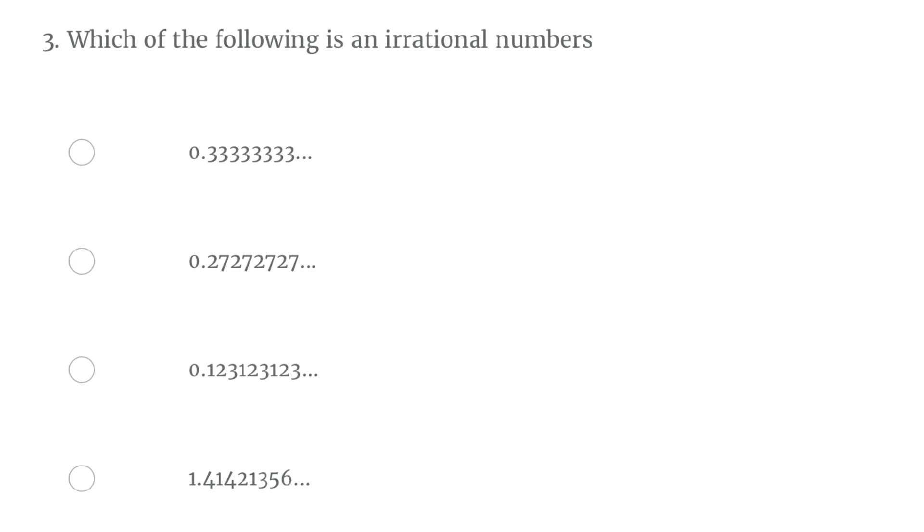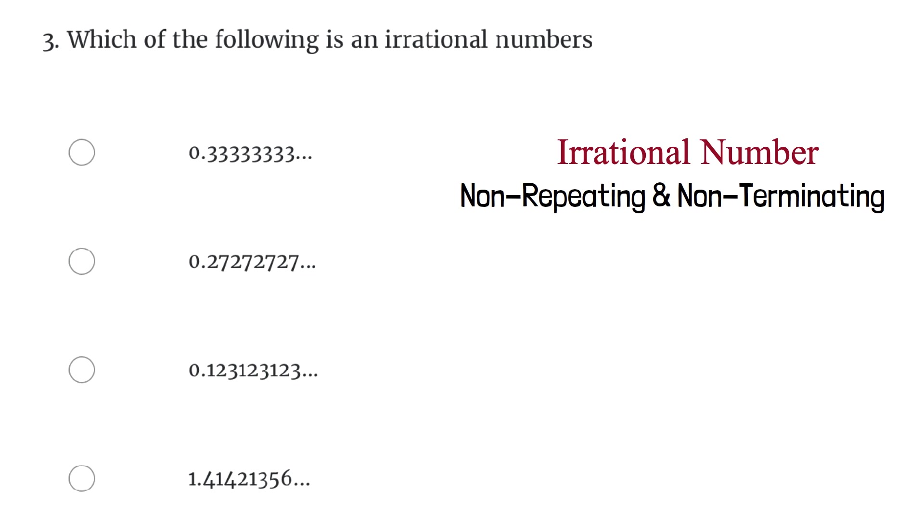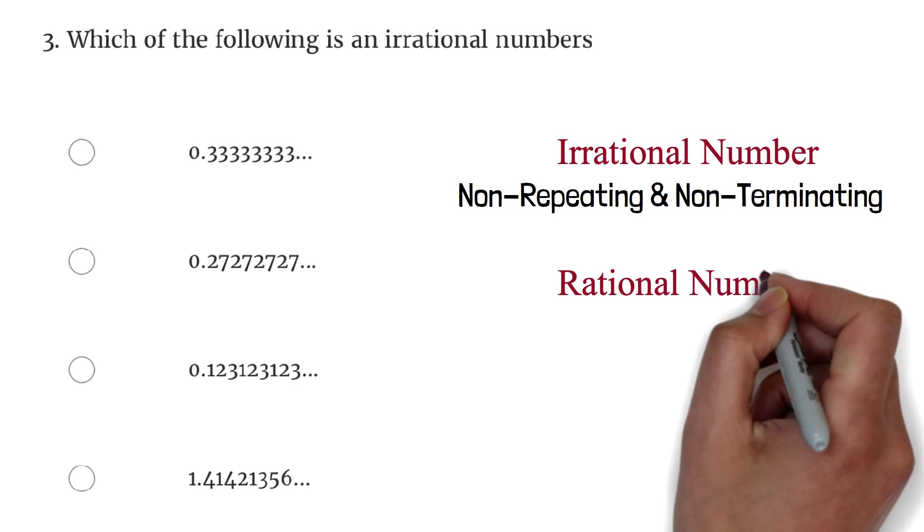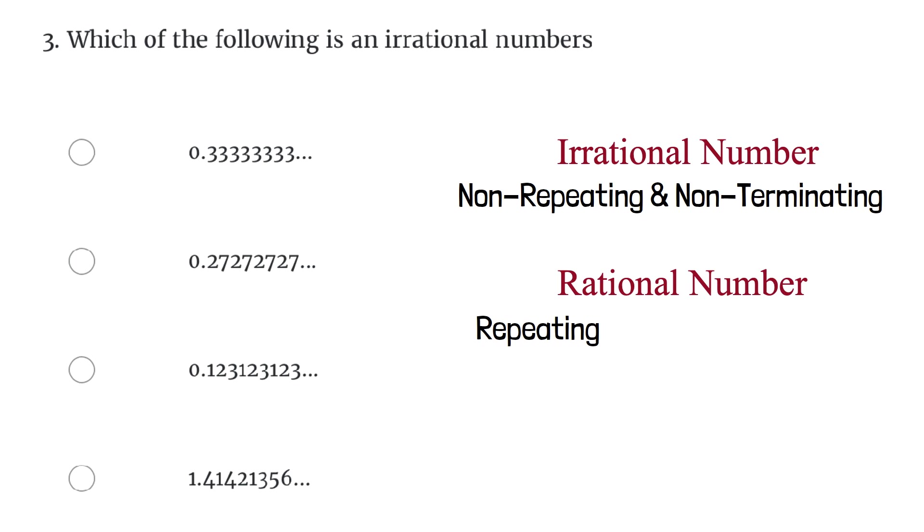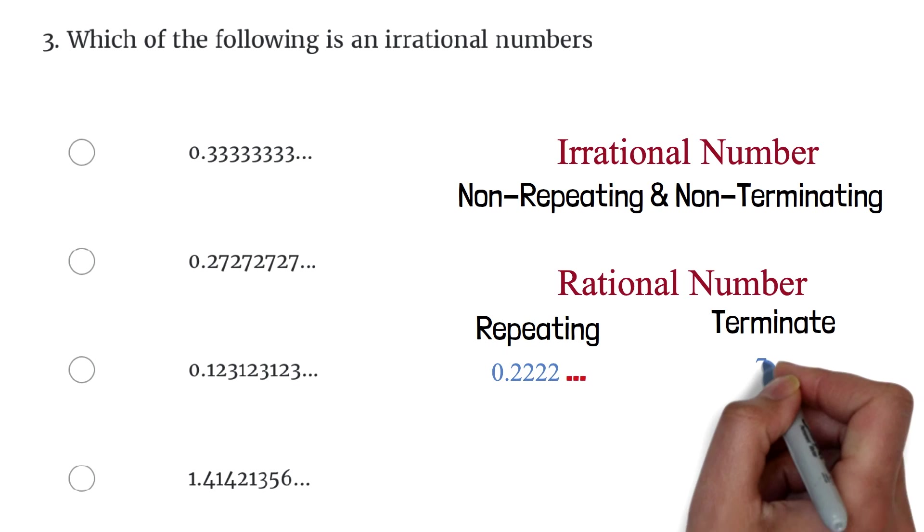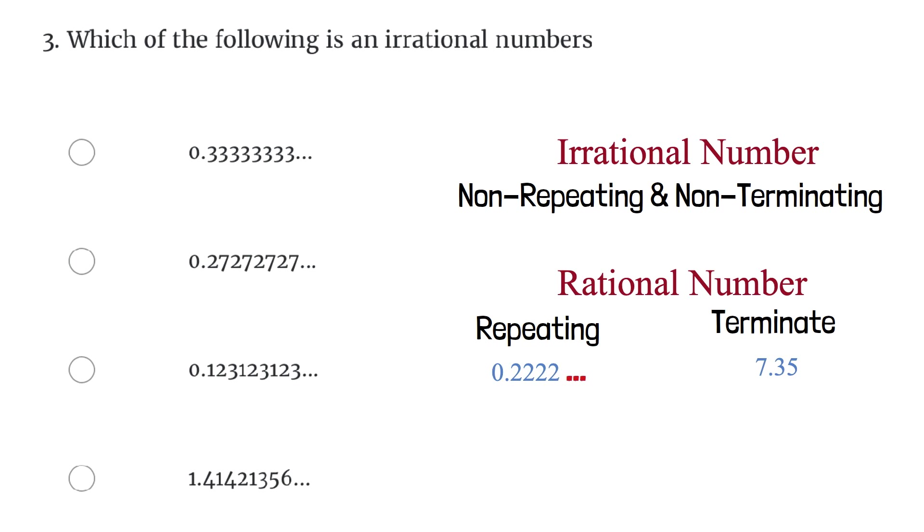When dealing with fractions or integers, it's easy to tell that a number is rational. But when dealing with decimals, it becomes quite confusing if you don't know what you're looking for. In this question, we are supposed to find the number that is irrational. For decimals, we look at an irrational number as a number that has non-repeating and non-terminating decimals. Therefore, for a rational number, the decimals must either repeat, like 0.22222 repeating. We use these dots to show that the number continues. Here, the two repeats, or the decimals must terminate. Example, 7.35. There are no more numbers after the 3, 5. No dots to show that it continues.